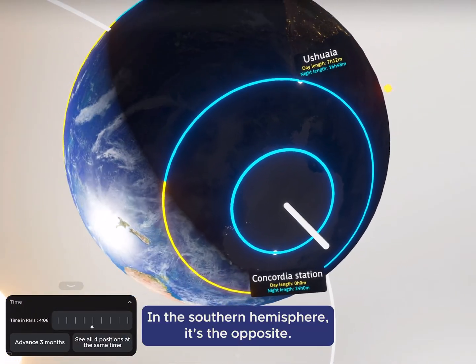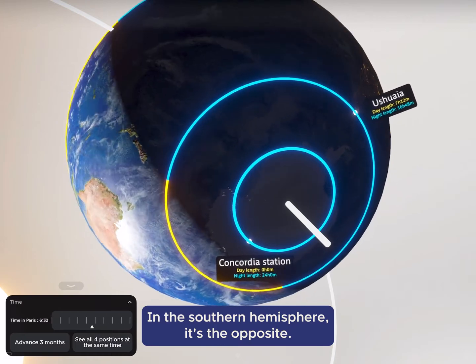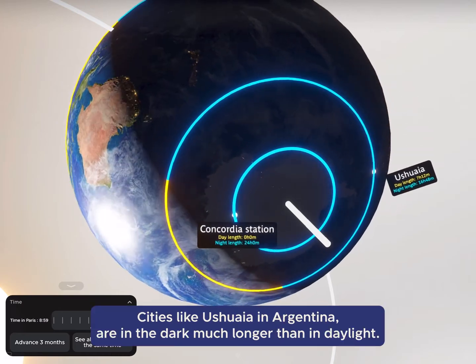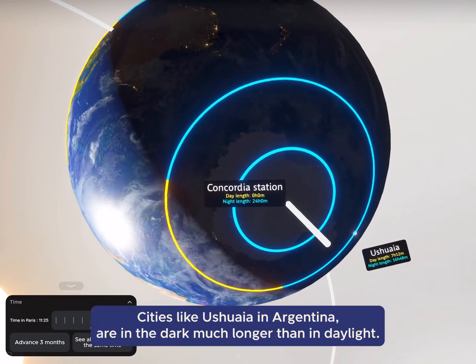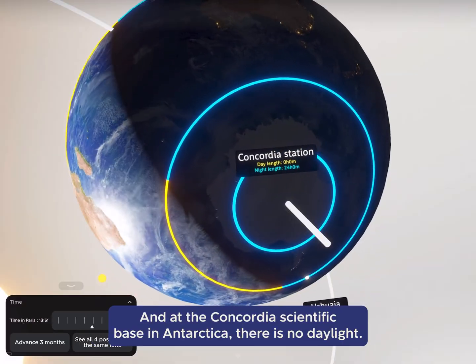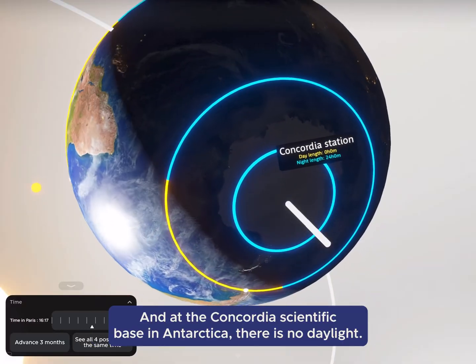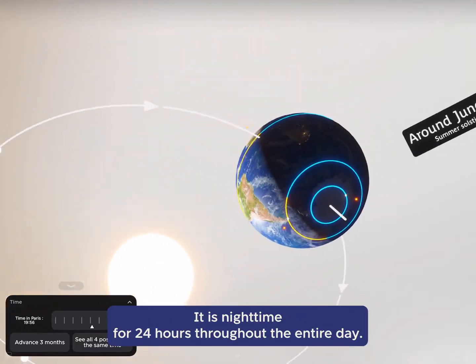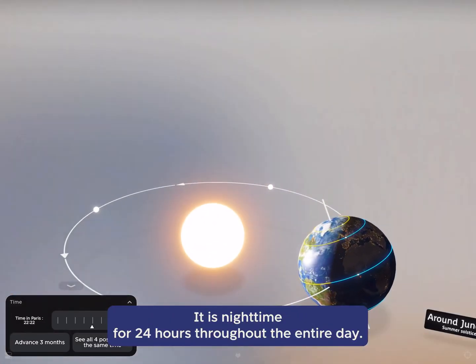In the southern hemisphere, it's the opposite. Cities like Ushuaia in Argentina are in the dark much longer than in daylight. And at the Concordia scientific base in Antarctica, there is no daylight. It is nighttime for 24 hours throughout the entire day.